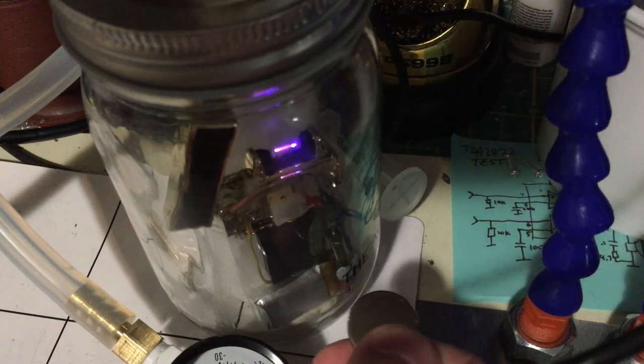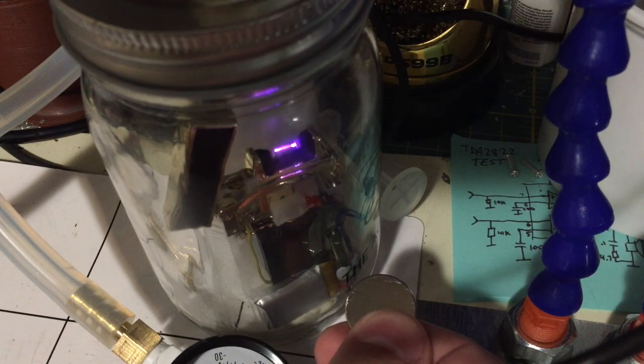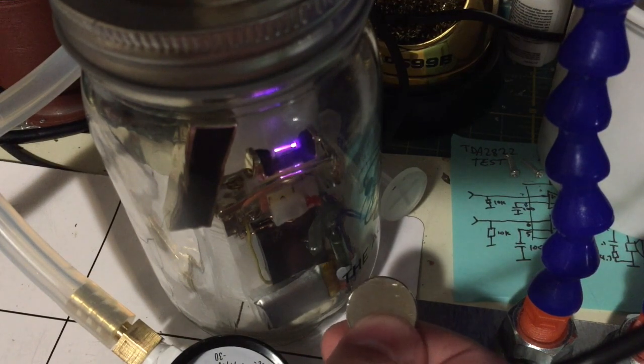Now if you look really carefully, you can see one electrode seems to light up more than the other. There's like a little blue dot on the right hand electrode.